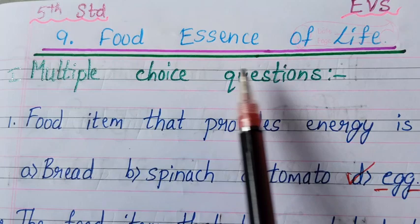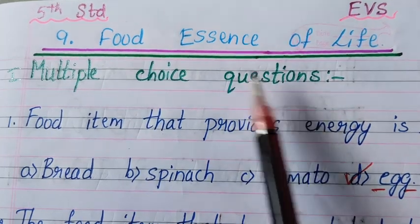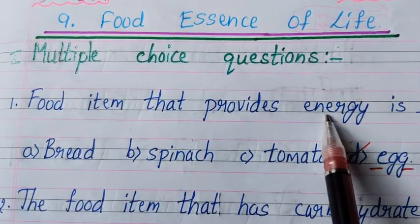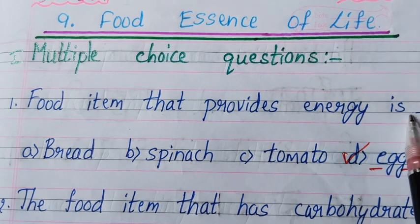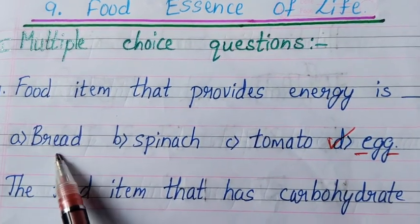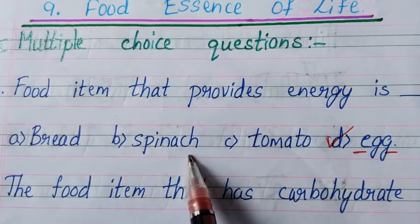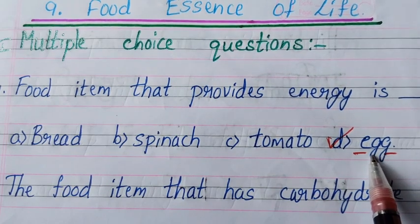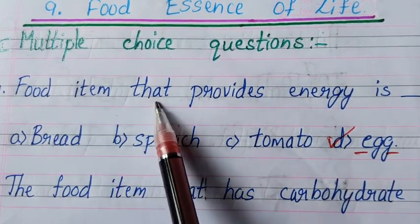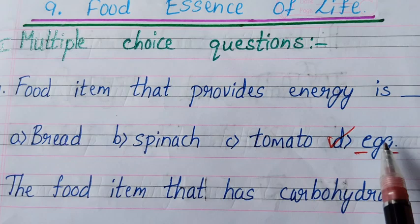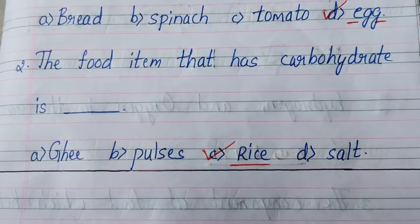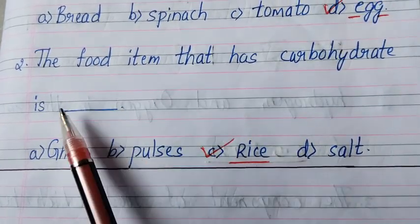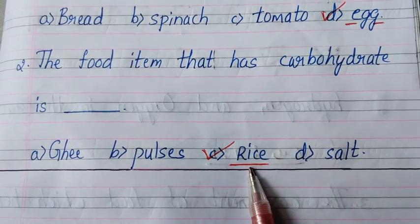First, multiple choice questions. First one: the food item that provides energy is — options are bread, spinach, tomato, egg. The answer is egg. The food item that provides energy is egg. Also, the food item that has carbohydrate is rice.